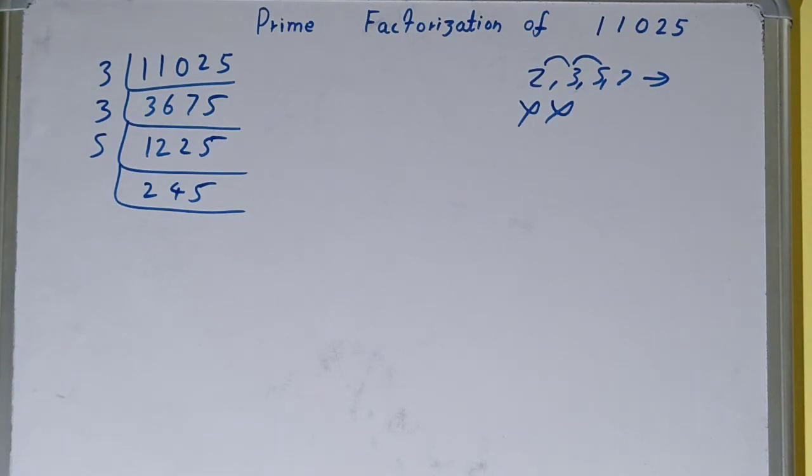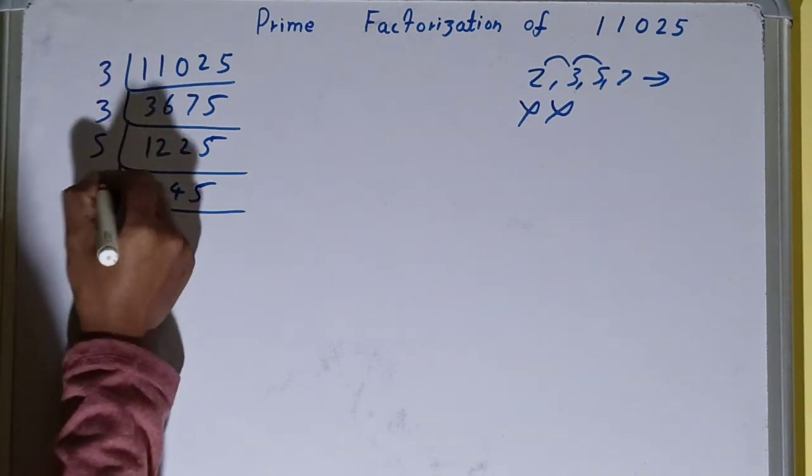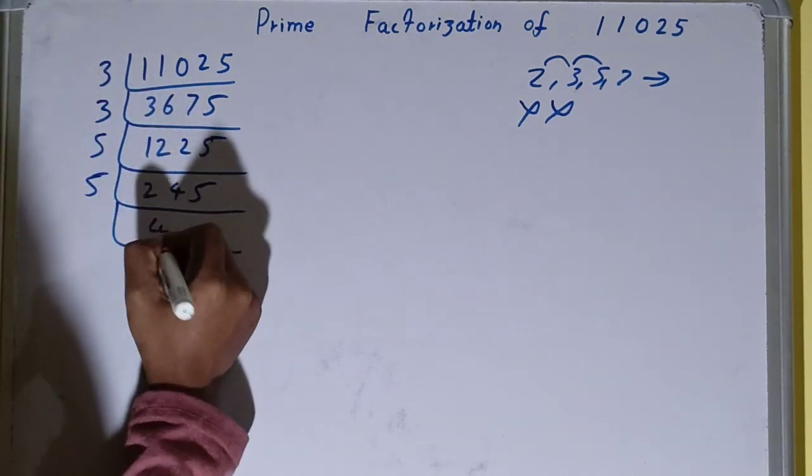Is this further divisible by 5? Yes, because the last digit is 5. So divide it and you'll be getting it as 49.